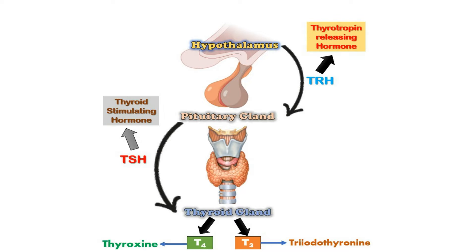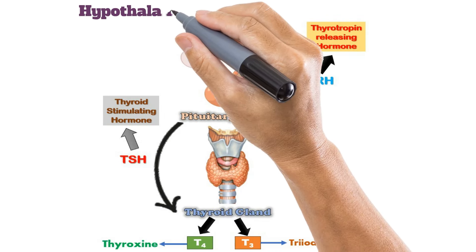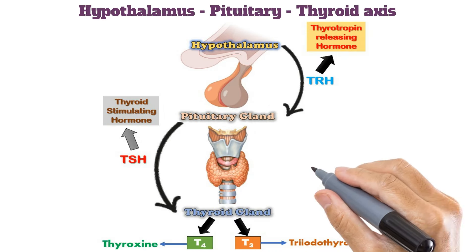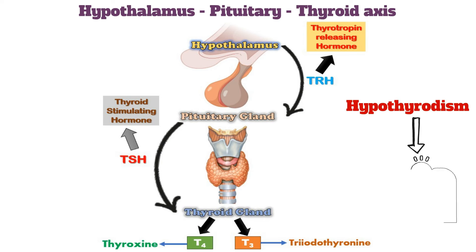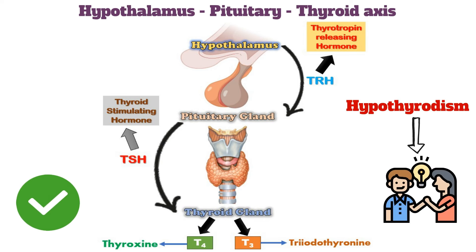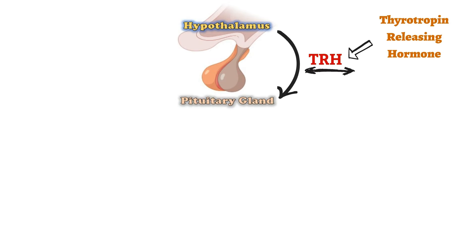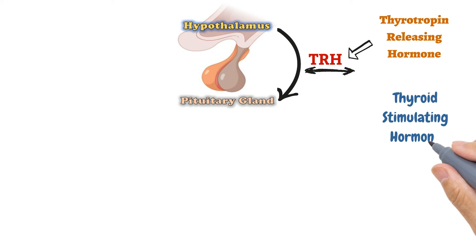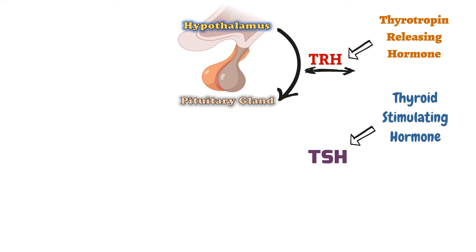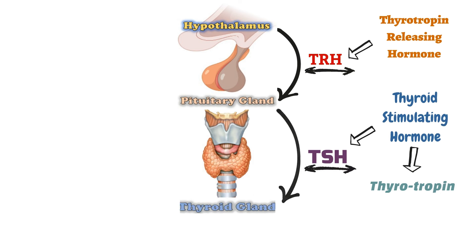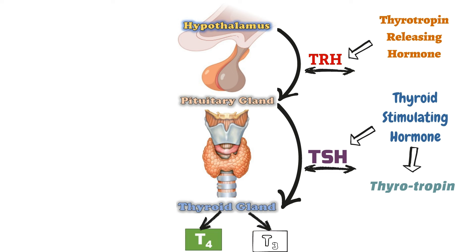There is a hypothalamus-pituitary-thyroid axis, and it is important to understand this axis to grasp hypothyroidism easily. Normally, the hypothalamus secretes thyrotropin-releasing hormone (TRH), which acts on the pituitary gland to secrete thyroid-stimulating hormone (TSH), also known as thyrotropin. This TSH then acts upon the thyroid gland, which secretes T4 and T3 hormones.